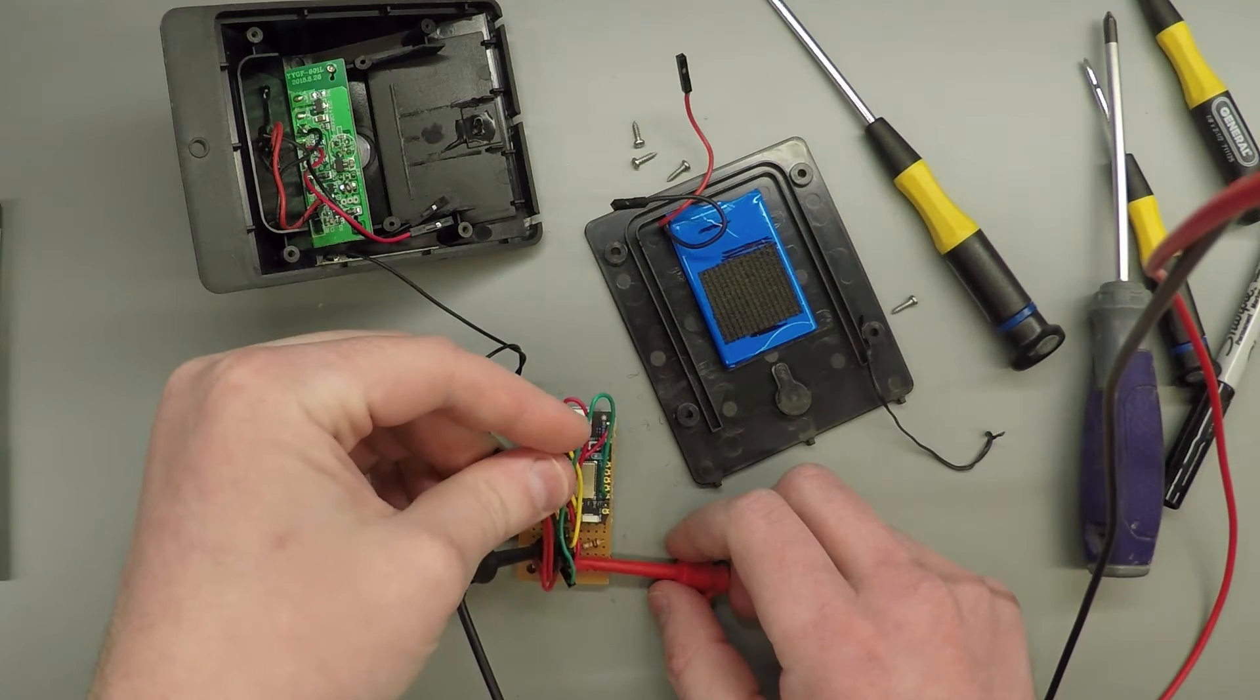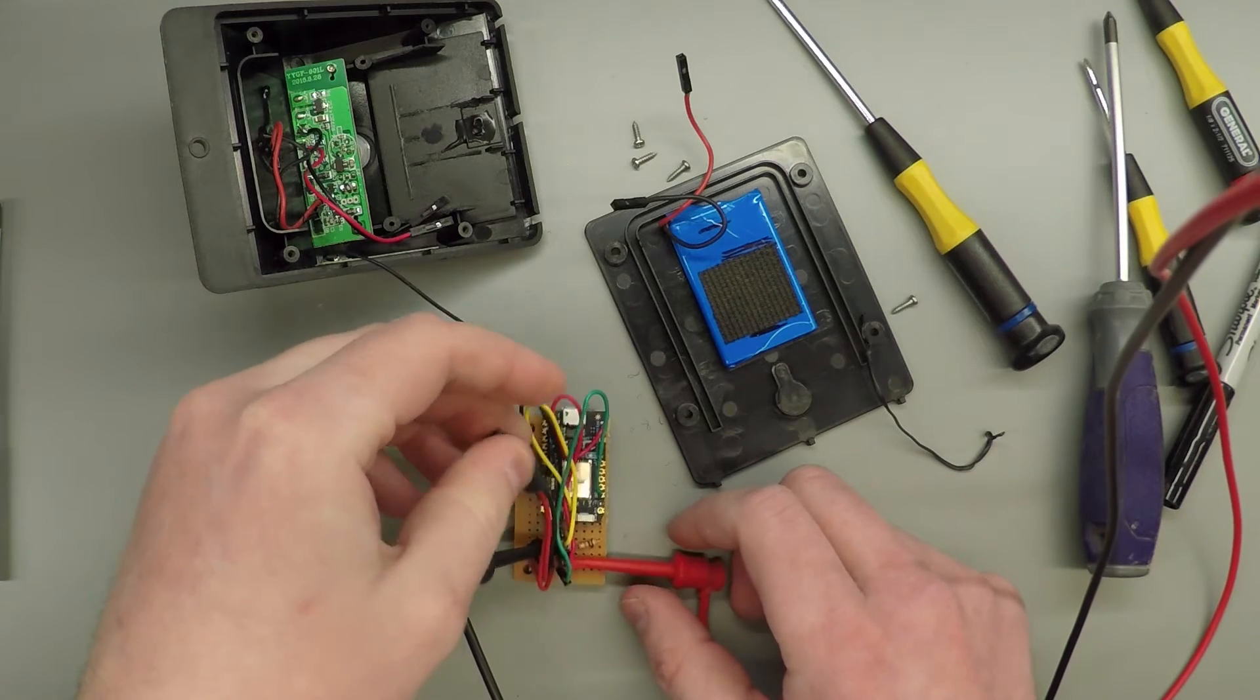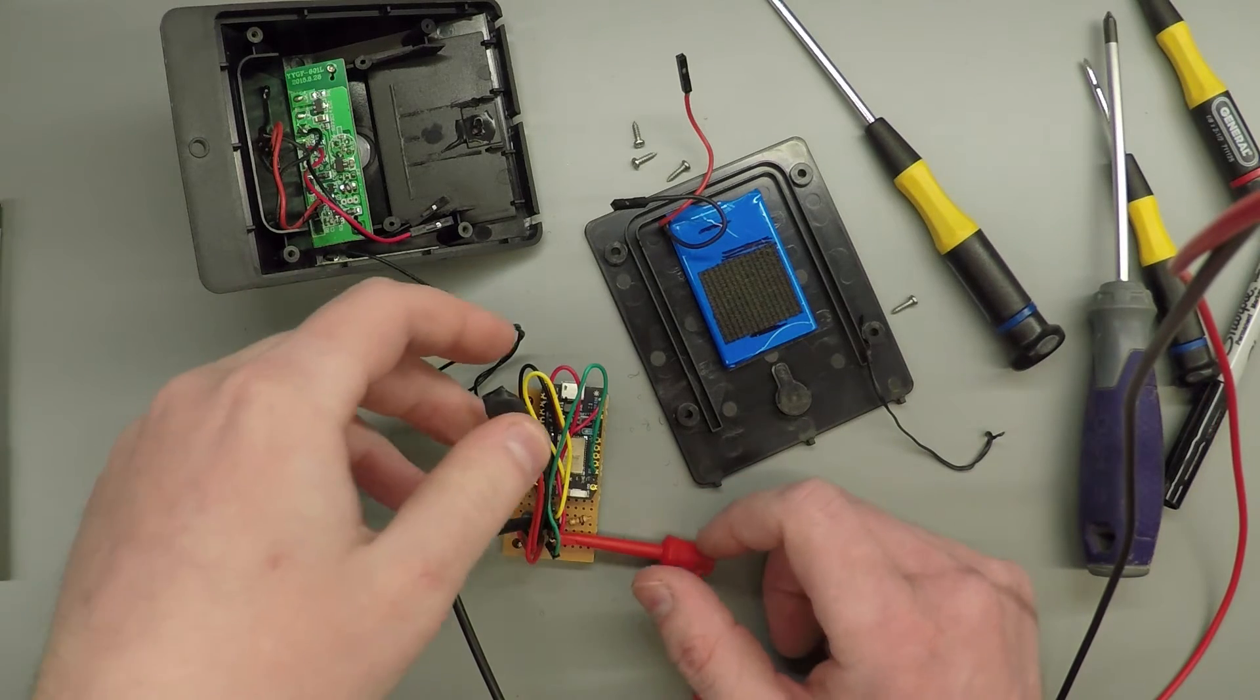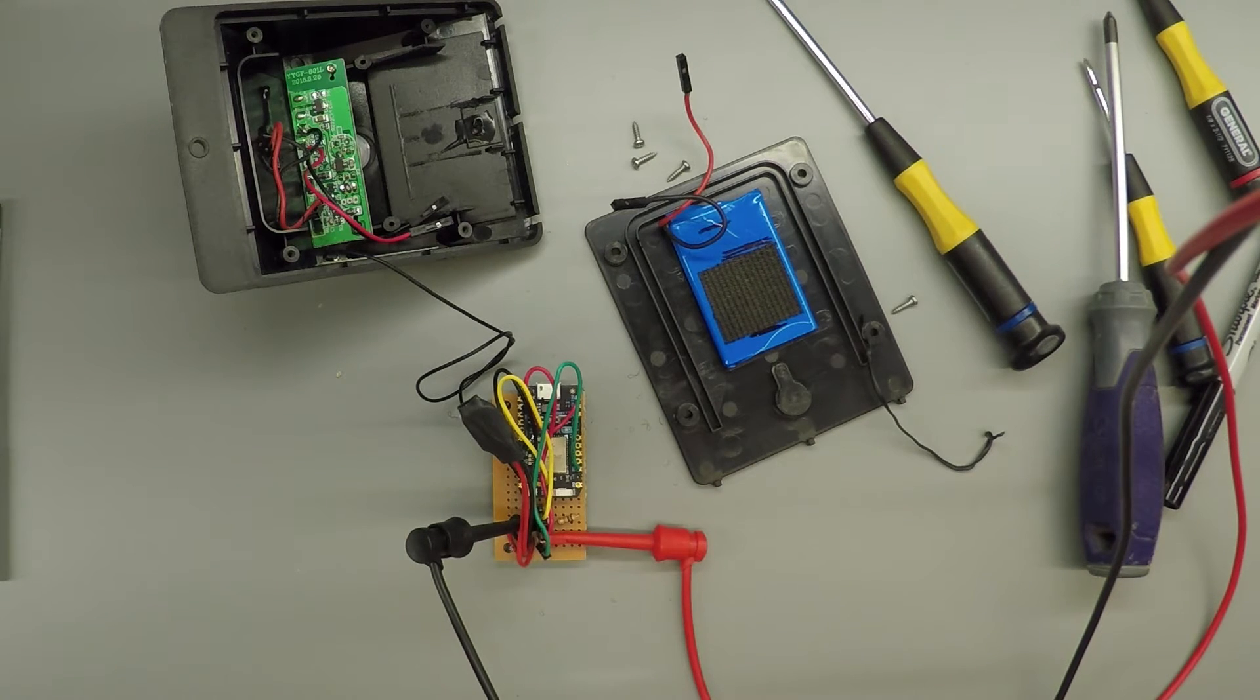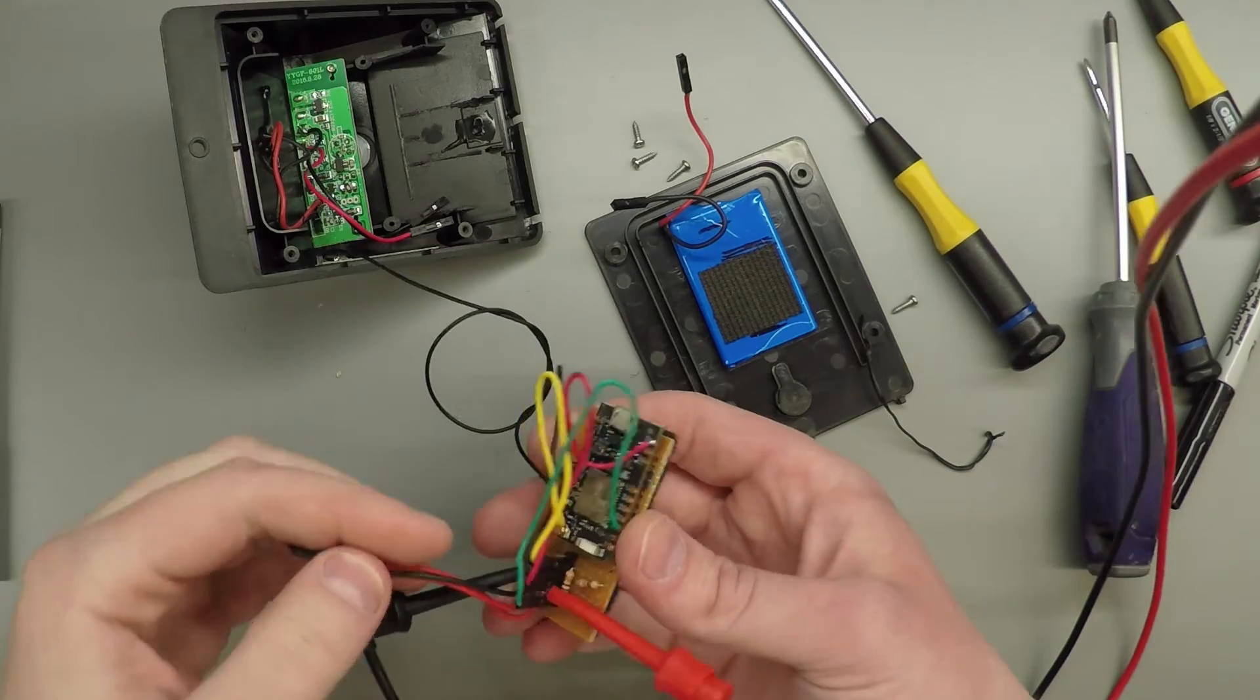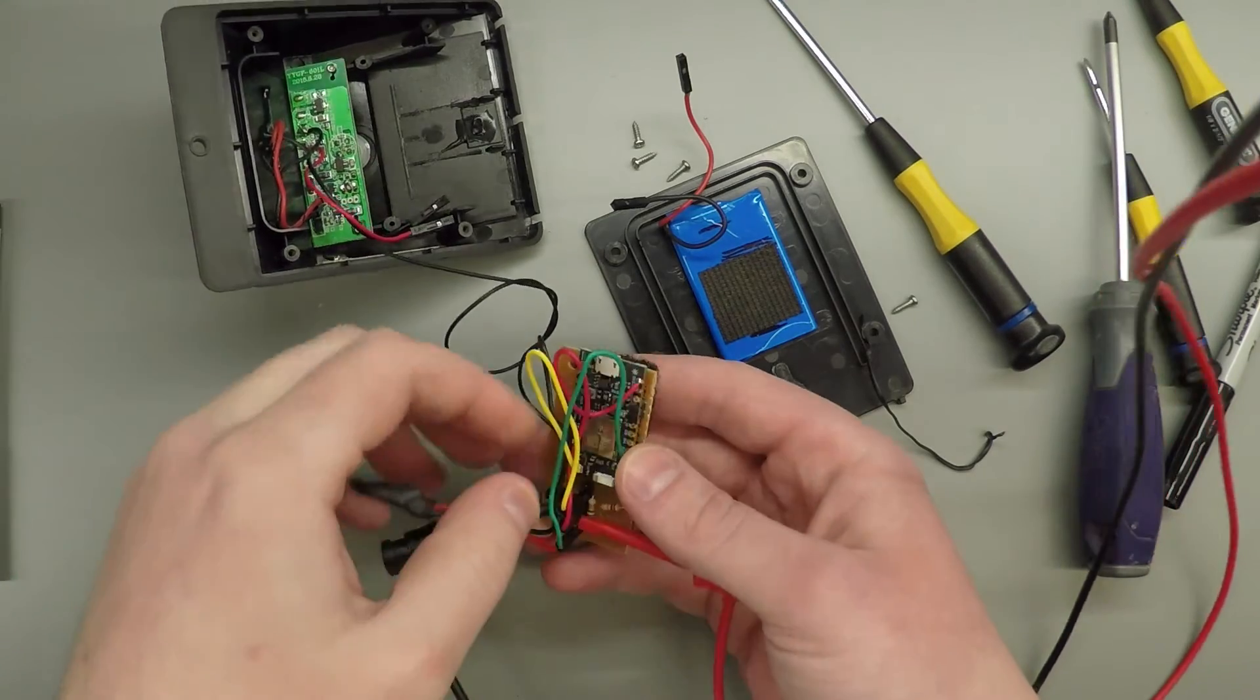It looks like something shorted out because my current just went up to half an amp. So let's try it again. Yeah, it's one volt at half an amp. Surely something's fried. Now just gotta figure out what it is.